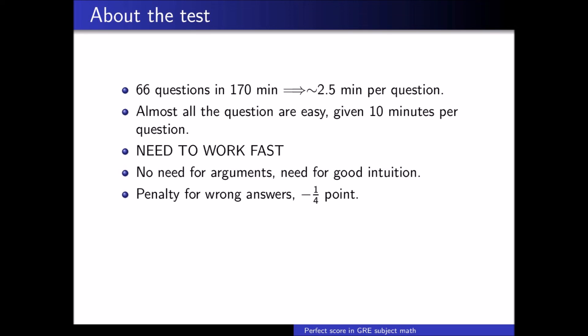Notice the penalty for wrong answers, so guess with caution. The scores are normalized to a curve. For example, it is possible to get a perfect 900 out of 900 with 63 correct answers and 3 mistakes. Finally, all questions weigh the same, so skip the ones you struggle with.